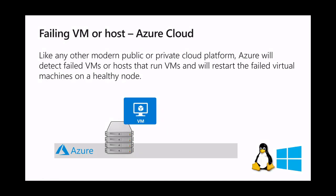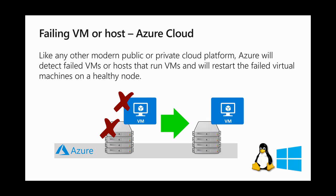Another scenario we need to protect SAP applications against is the failure of a virtual machine or the underlying host infrastructure. Most public clouds use self-healing technology to restart the virtual machine on a healthy node if this happens. If the virtual machine or the physical node fails, the fabric will move the virtual machine to a healthy node, restart it, and the server becomes available again. Usually the impact to an SAP system is rather low — just a couple of minutes.